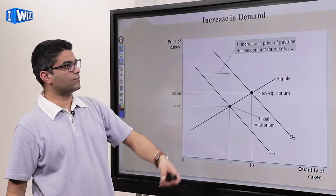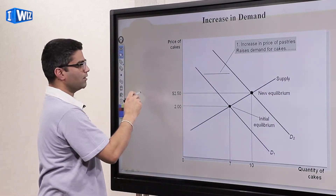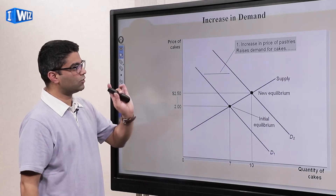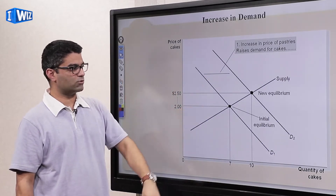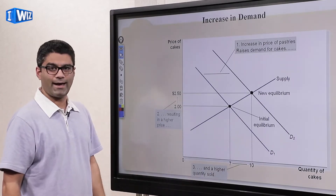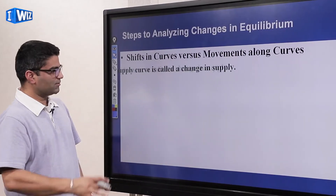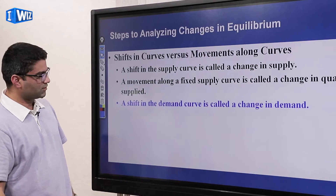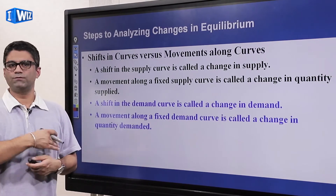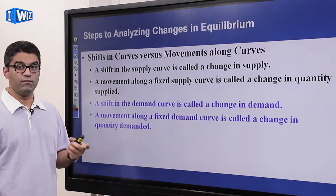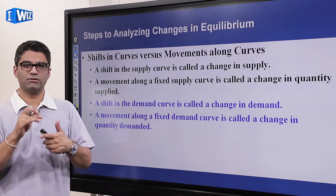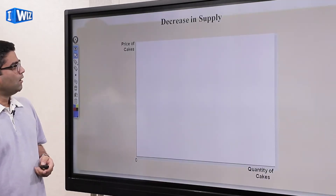Producers get paid 50 cents more, consumers pay 50 cents more, and three more cakes are produced and bought. Make sure you understand the change in price and equilibrium quantity as a result of an increase in demand. Also remember: a shift in the supply curve is called a change in supply; a movement along the supply curve is a change in quantity supplied. Similarly, a shift in the demand curve is a change in demand; a change in the price of the good moves you along the curve.